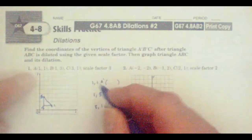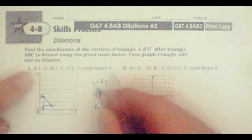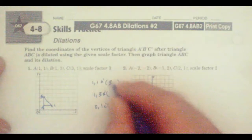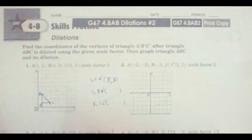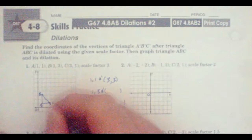Well, take a look at it. If we take 3 times 1, it's 3, and 3 times 1 is 3. So this is my new point here. Graph it in green. 3, 3 over 3 up 3. This is A prime.